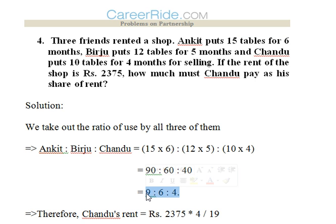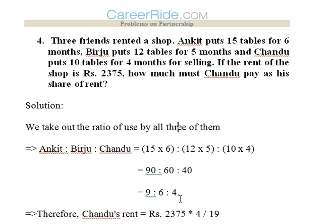Ankit, Birju, and Chandu have used the shop in the ratio 9:6:4. Chandu's share of rent would be 4 out of 19 (the sum of 9 + 6 + 4) multiplied by the total rent of 2375. So Chandu's rent comes to rupees 500.